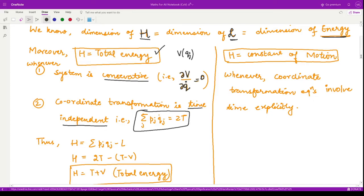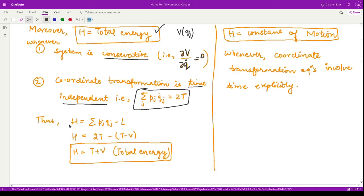Our Hamiltonian equation was summation over j pj qj dot minus L. Basically when our coordinate transformation is time independent, this quantity becomes equivalent to two times the kinetic energy. This is 2T and L is T minus V, so from here we get that H represents the total energy of the system, the sum of kinetic energy and the potential energy.